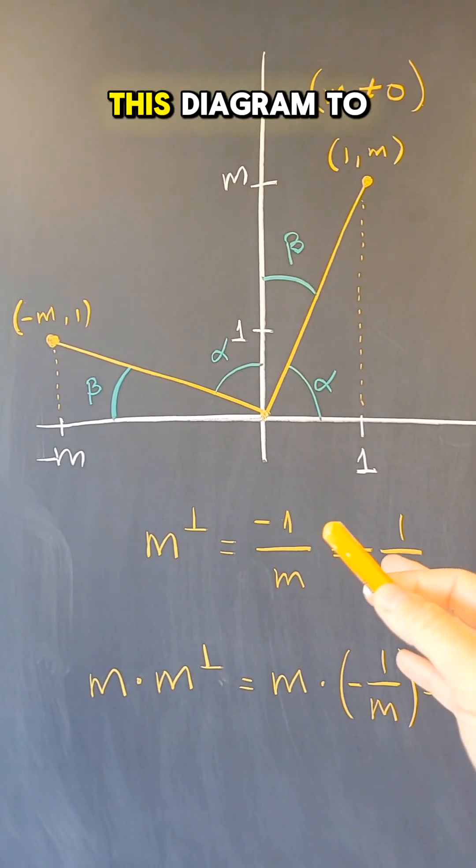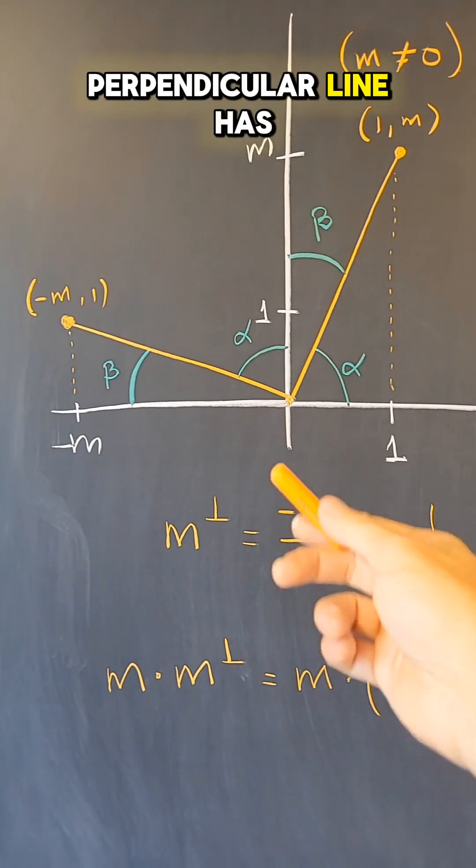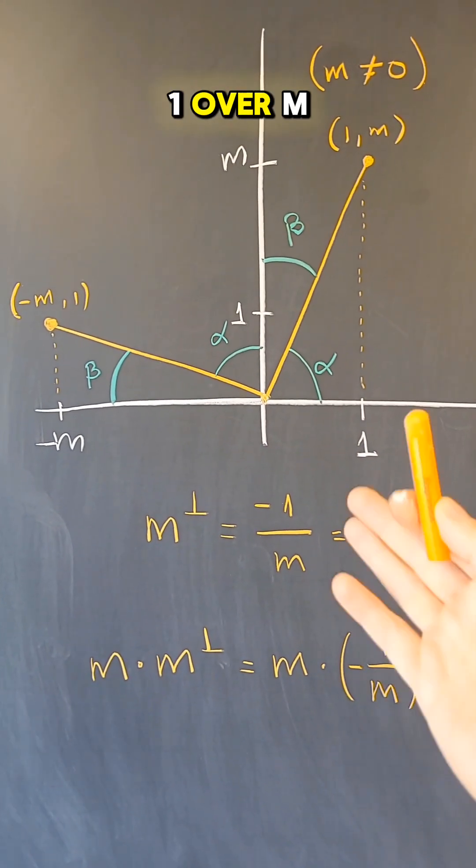Again, I used this diagram to show that if you have a line of a slope m, then the perpendicular line has a slope minus 1 over m.